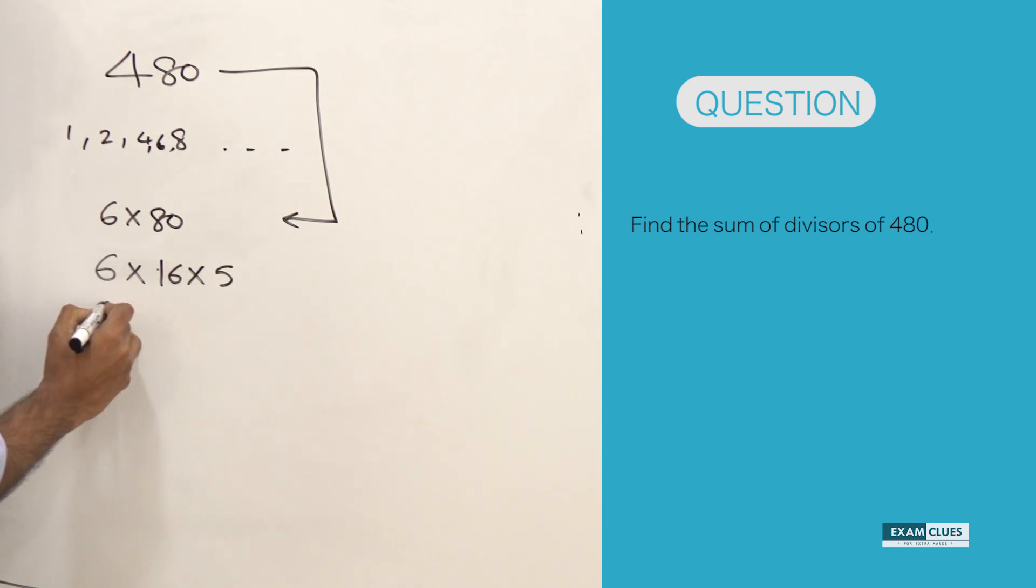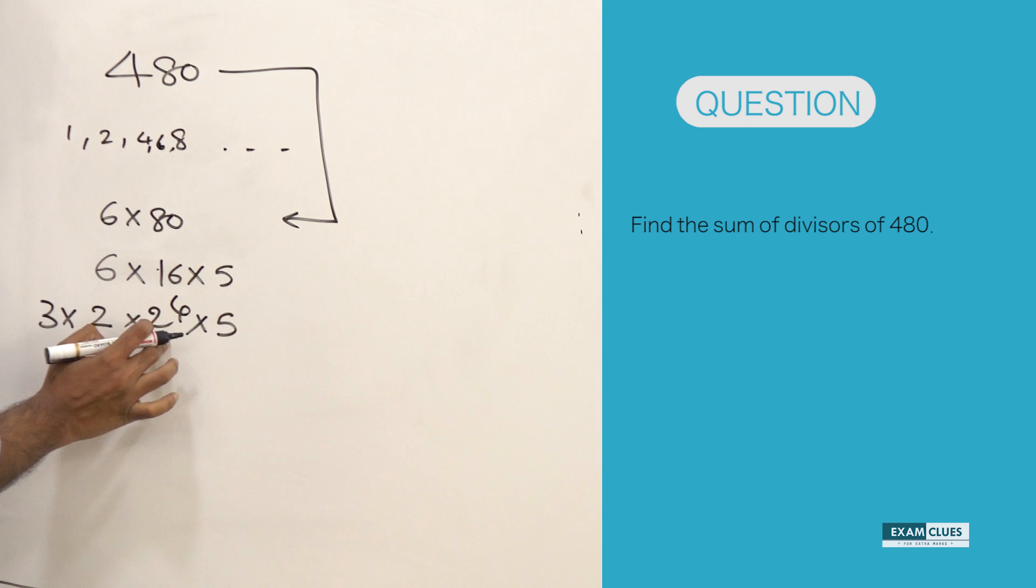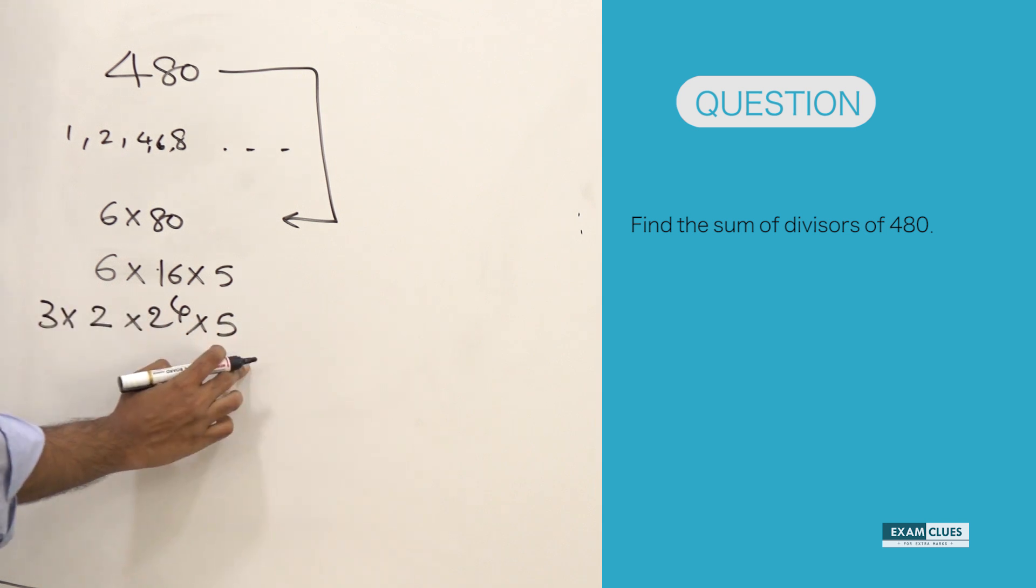Now this can be written as 2 into 3. So this is 3 into 2 into 2 power 4 into 5, because factorization we do always in prime factors. 2 is a prime factor, 3 is a prime factor, and 5 is a prime factor. So if you look at this, it is 2 power 5 into 3 into 5.